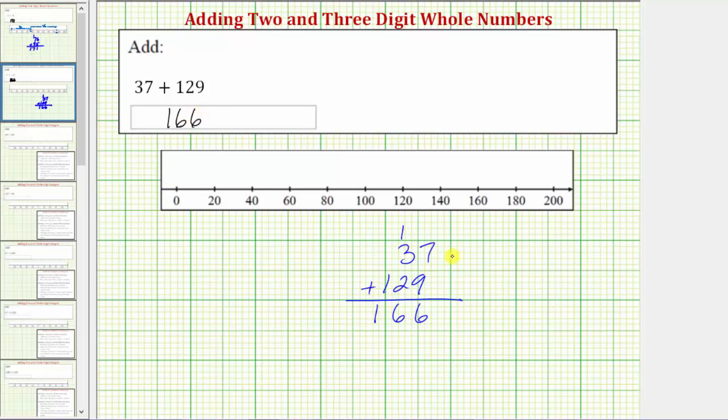I also want to point out that because addition is commutative, meaning if we change the order of the addition, it does not change the sum, we can also write this as one hundred twenty-nine plus thirty-seven. So again, thirty-seven plus one hundred twenty-nine equals one hundred twenty-nine plus thirty-seven.